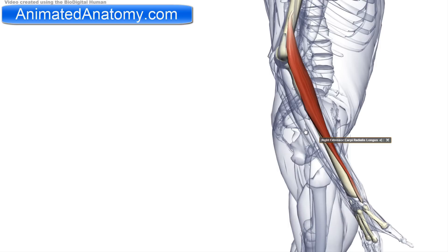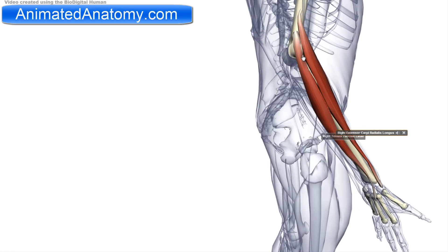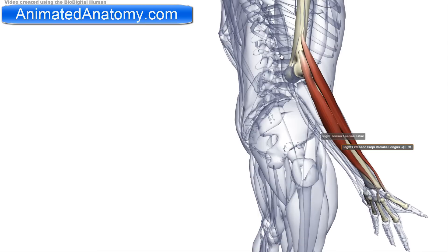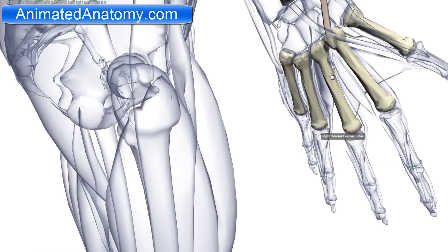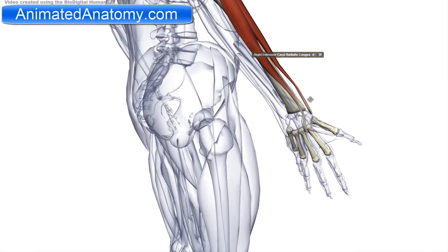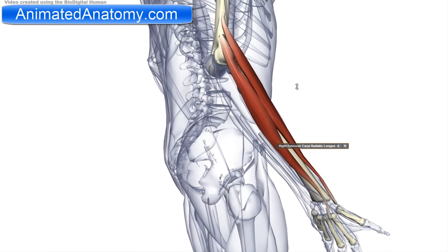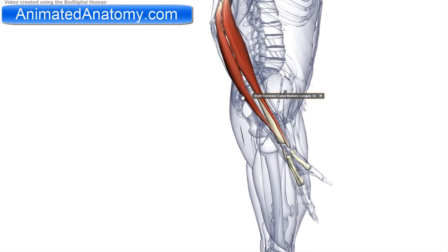The next muscle I will talk about is the extensor carpi radialis longus — this muscle here. It also has its origin on the lateral supracondylar ridge, and the insertion of this muscle is the base of the second metacarpal bone. It is innervated by the radial nerve, just like the previous muscle, but the action is quite different. It serves to extend the wrist joint and also to abduct the hand at the wrist.